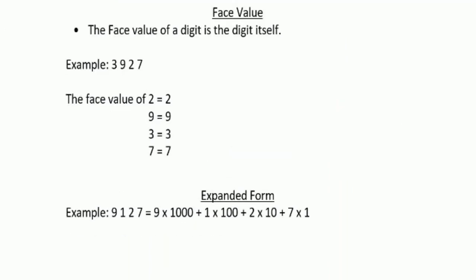What do you mean by face value of a number? The face value of a digit is the digit itself. For example, in the number 3927, the face value of 2 is 2, the face value of 9 is 9, the face value of 3 is 3, and the face value of 7 is 7.